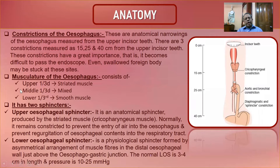Regarding the musculature of the esophagus: the upper third is composed of striated muscle, the lower third of smooth muscle, and the middle third is mixed — both striated and smooth muscle. This is a basic difference compared to other parts of the gut.